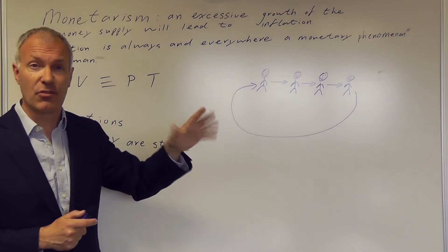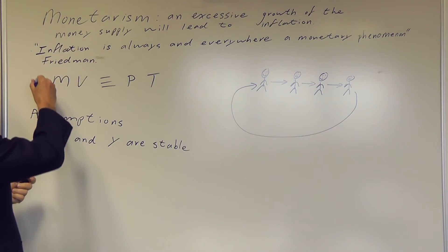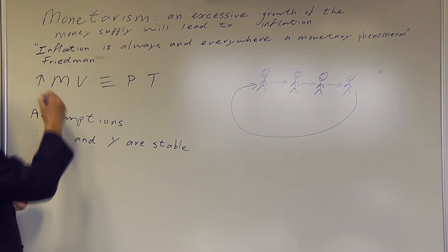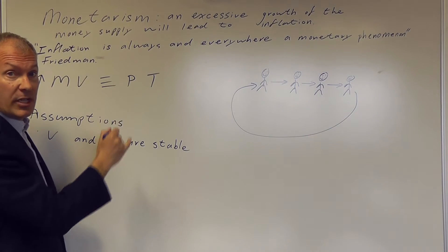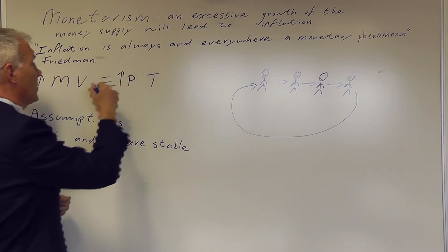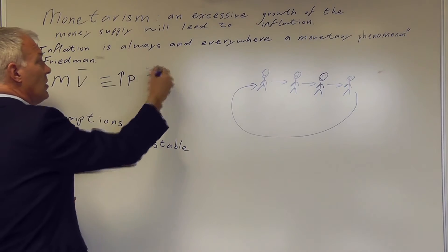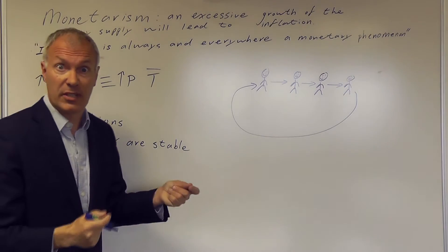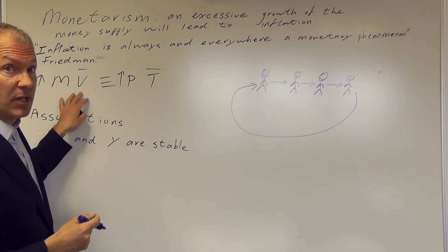And the simple idea of monetarism is this: if we increase M, it will always result eventually, generally after a year and a half, in an increase in the price level. Because V and T are assumed to be stable by the monetarists.